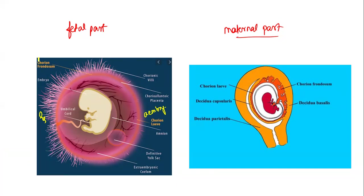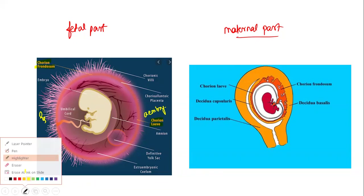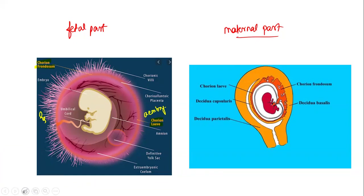The densely arranged chorionic villi along the embryonic pole is called chorion frondosum — this is a very important viva or MCQ question. The region along the abembryonic pole where hardly any villi are seen is called the chorion laeve. So the structure contributing to the fetal part of placenta is the chorion frondosum.